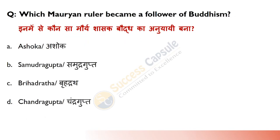Which Mauryan ruler became a follower of Buddhism? Answer is A — Ashoka. He was the third emperor of the Mauryan empire, and his edicts indicate that after the Kalinga war, he became a follower of Buddhism.